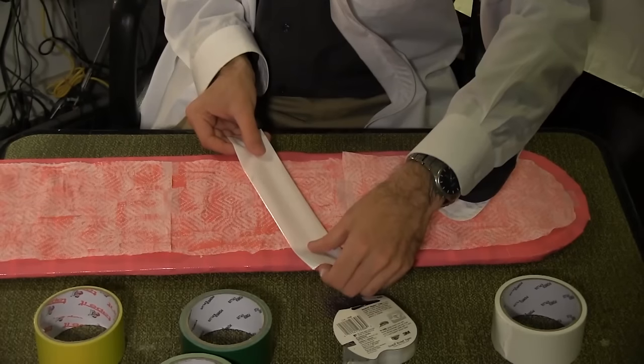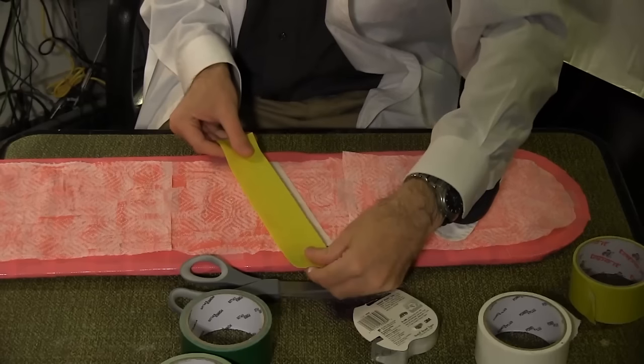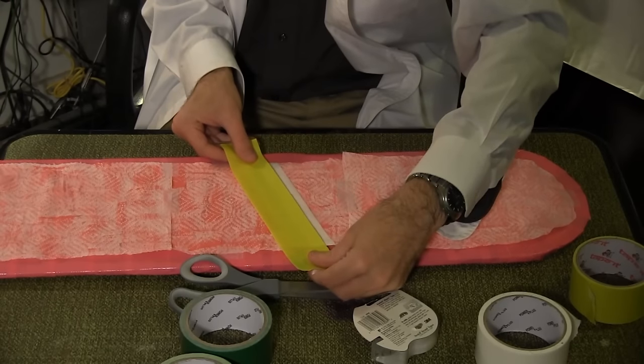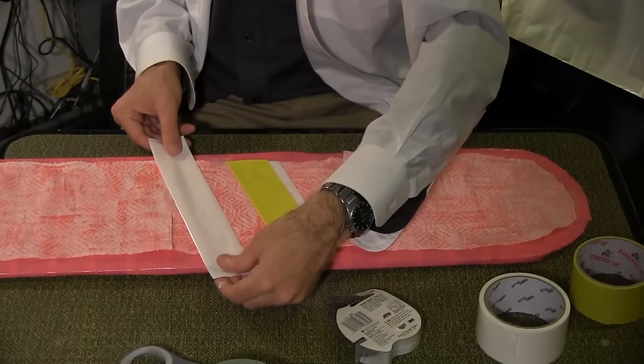Next, lay down a layer of the white at a slight angle and cut away the excess. Over topmost of the white, lay a strip of yellow and cut away the excess. Repeat this process for a second yellow strip.